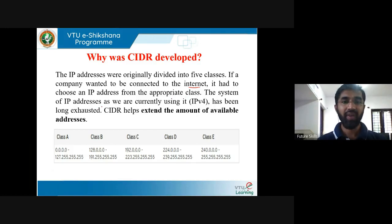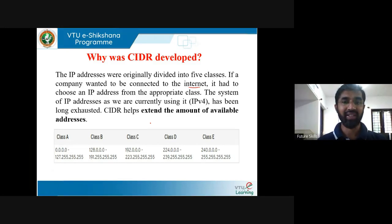The system of IP addresses, as we are currently using it, has long been exhausted. IPv4 is 32 bits long, so there are 2 to the power of 32 addresses. CIDR helps extend the amount of available addresses.